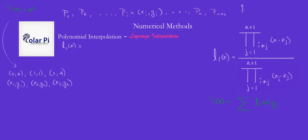Notice that Li of Xi is going to be 1. You'd have Xi minus XJ there, and likewise here. And then Li of XJ is 0.